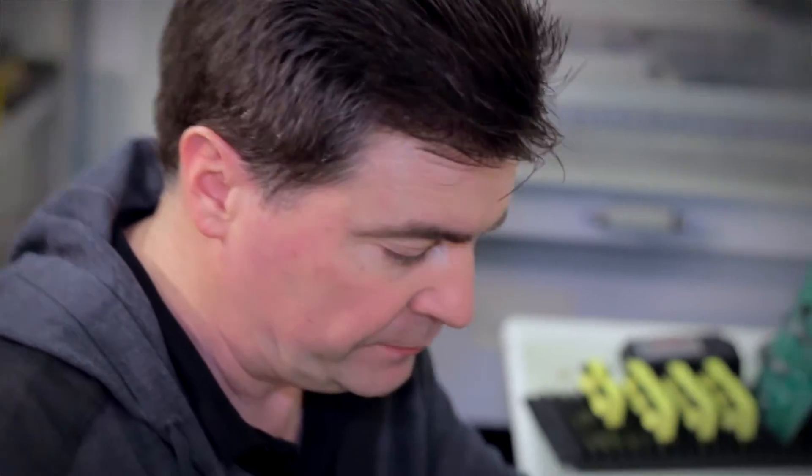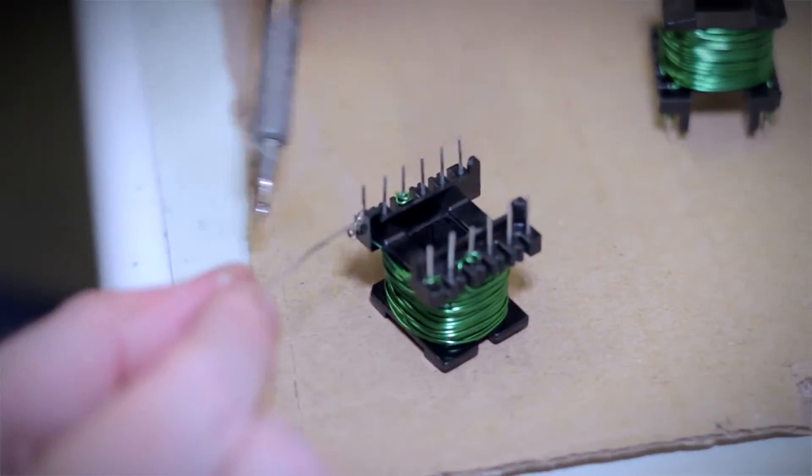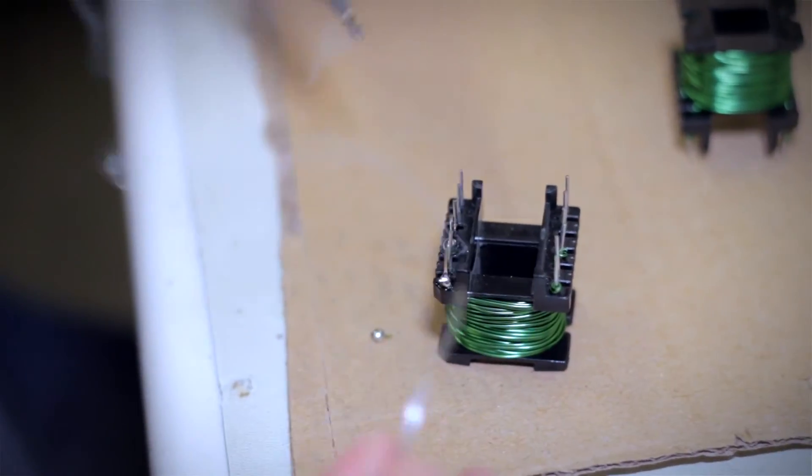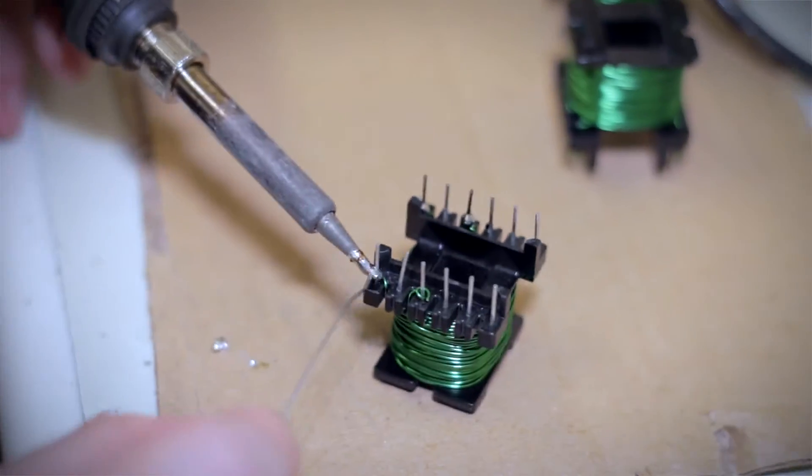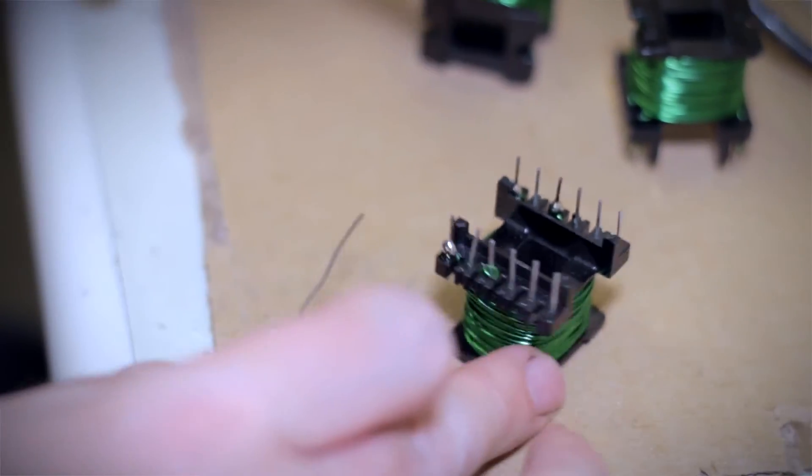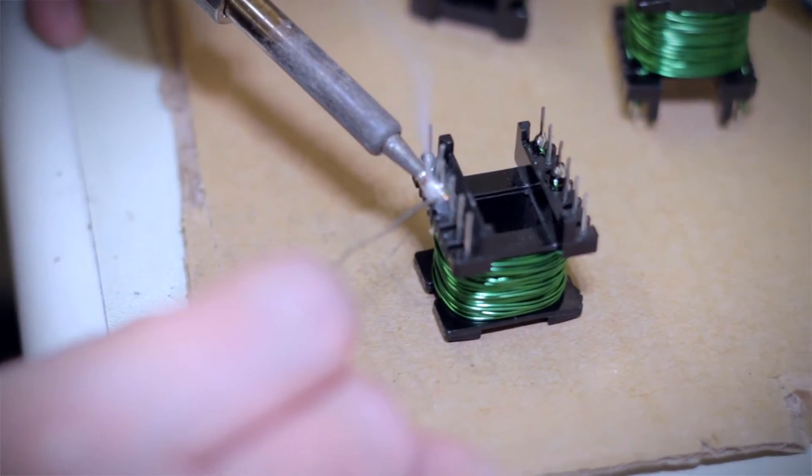Now for our last step, we're going to solder the wires to the bobbin pins. This is a special transformer wire that's designed to automatically melt the coating when you use solder. We just have to get a nice ball on it, heat it up, and it solders itself. And one more.